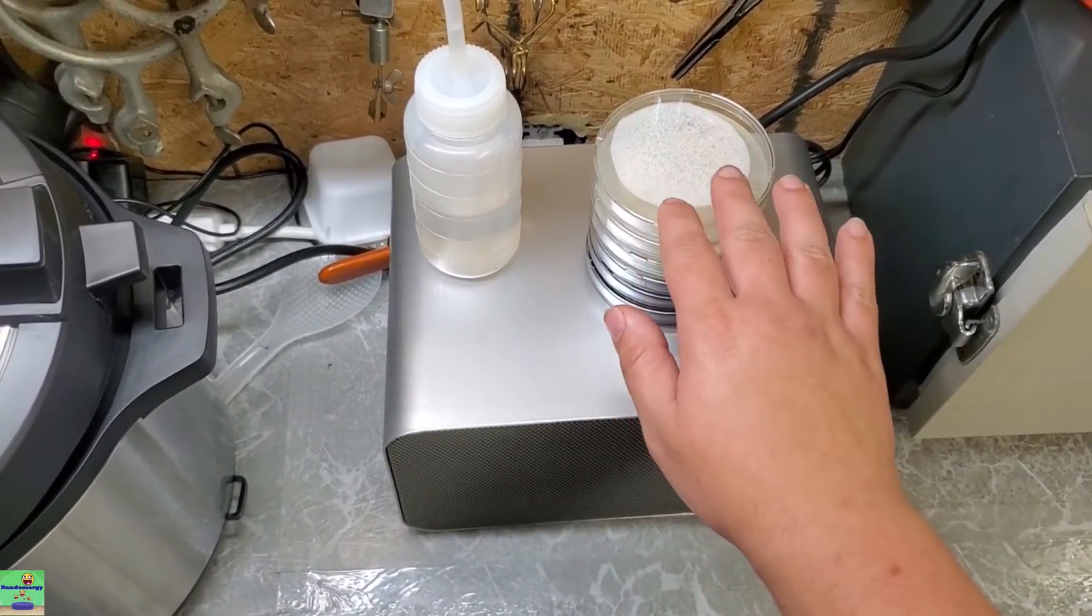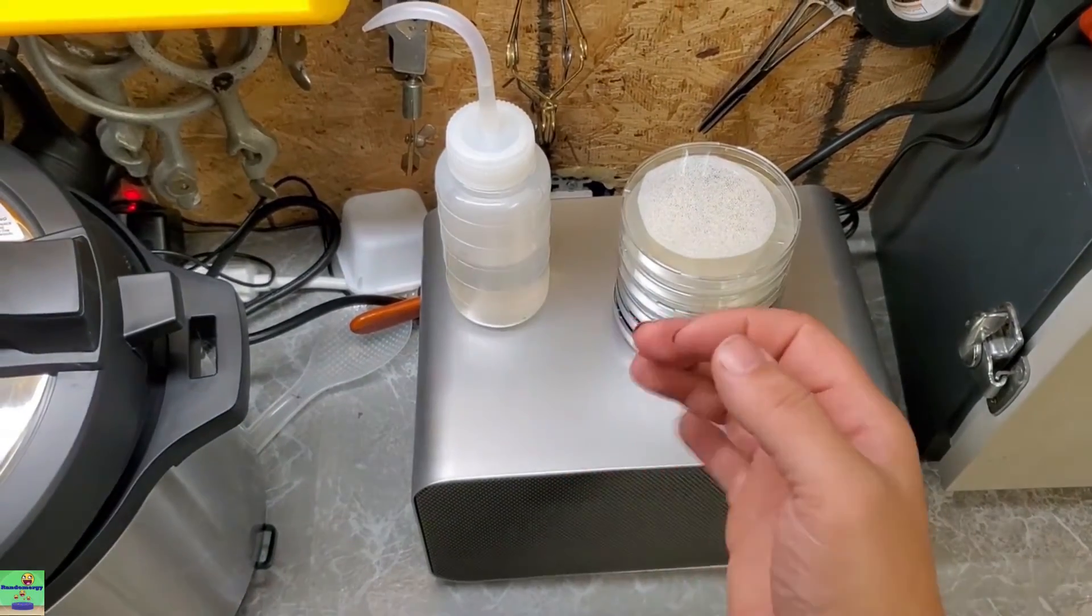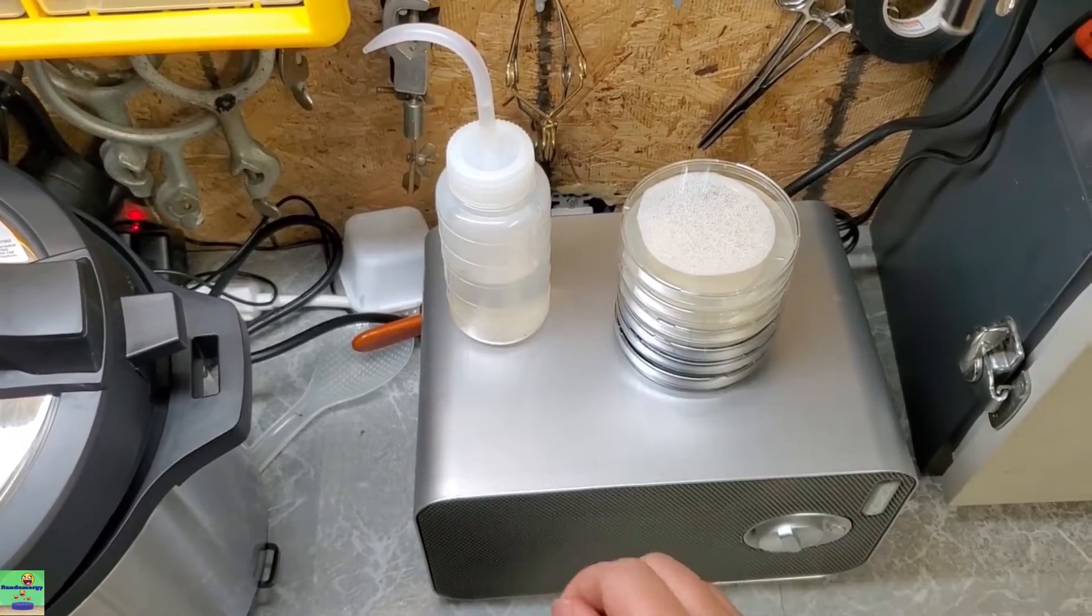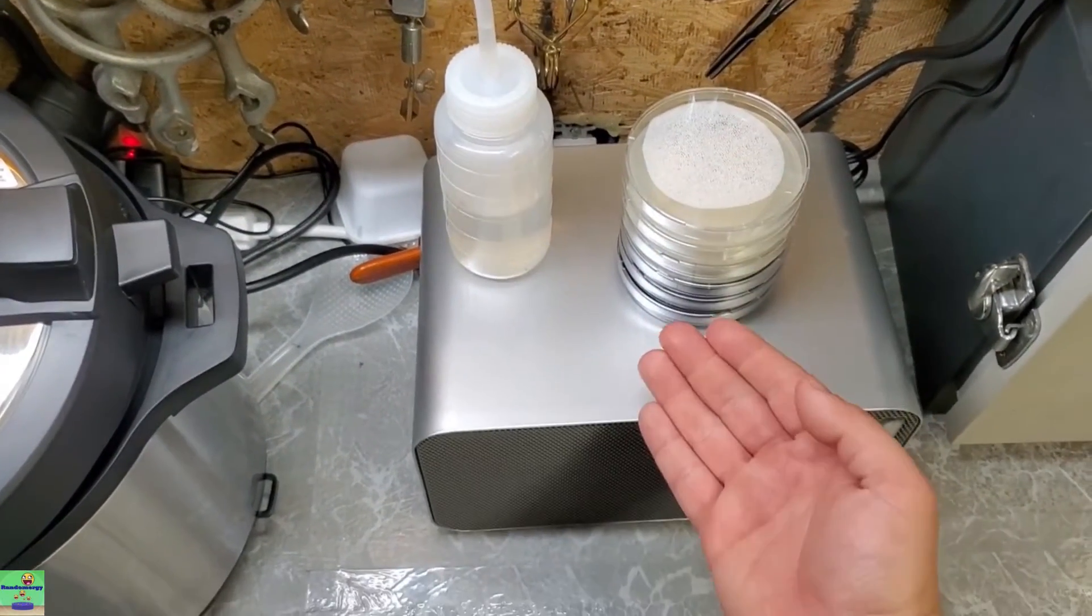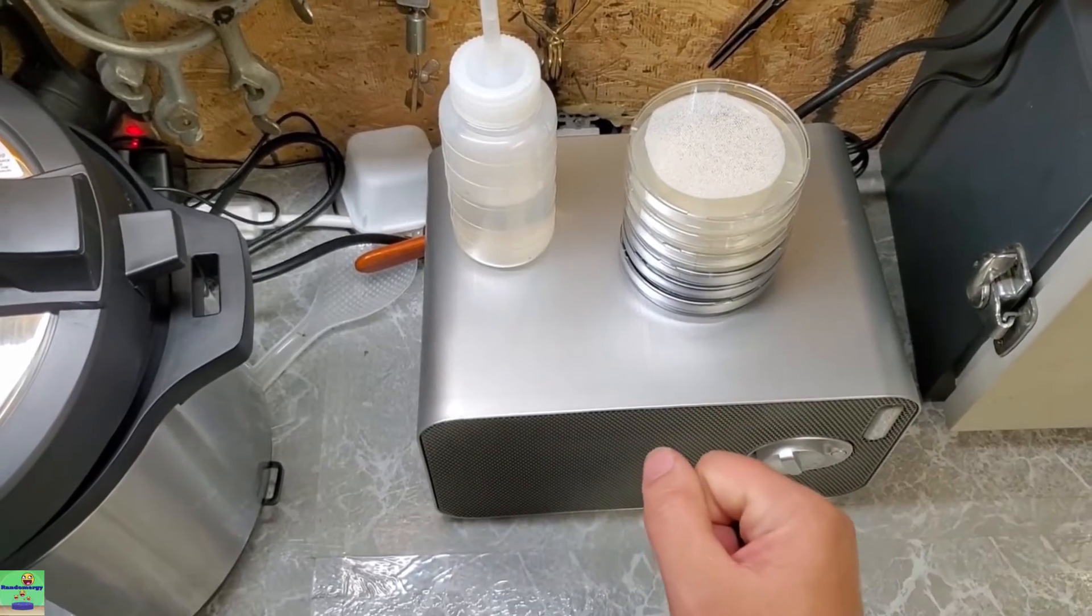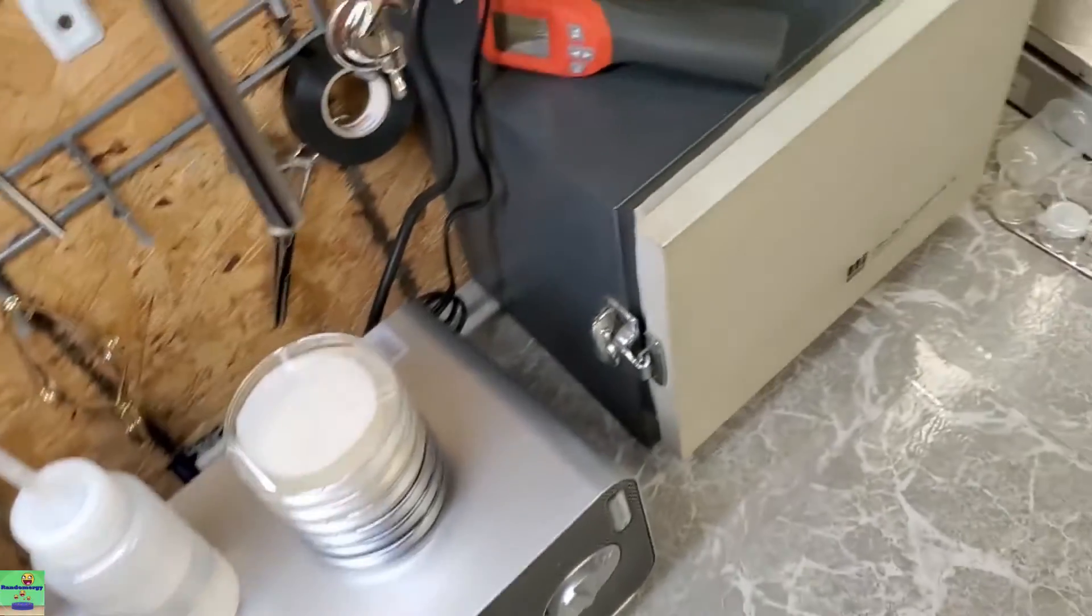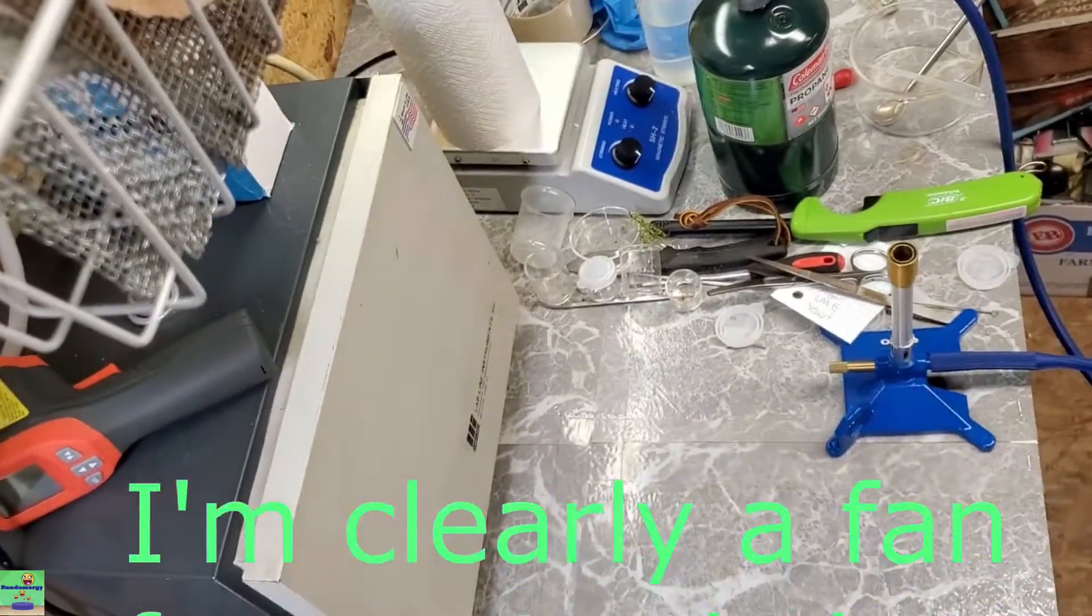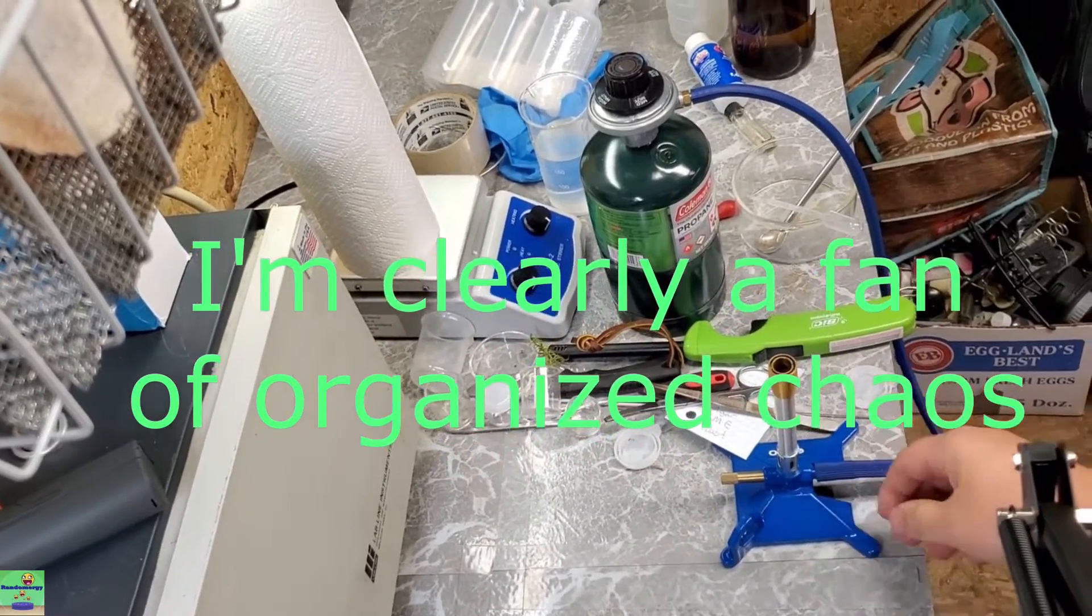Here I have some agar plates. Half of them are just regular agar plates with light malt extract and some yeast extract for nutrients. The top three are clear and the bottom three have powderized activated carbon in them for better contrast for mycelium.